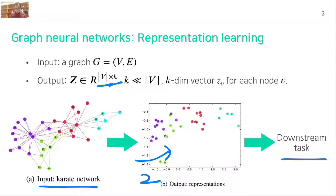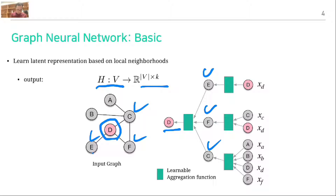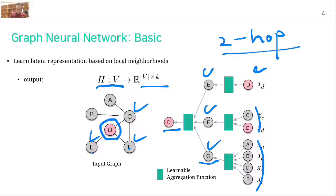We can summarize graph neural networks using one figure. We take each vertex and compute a k-dimensional representation. For example, to get the representation of node D, we consider its first neighbors. Each representation depends on its neighbors: F is from C and D, C is from A, B, and C and D. In this case it considers two-hop neighbors, and we decide the final representation of D.